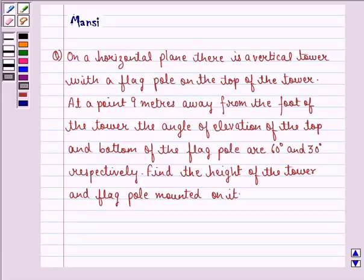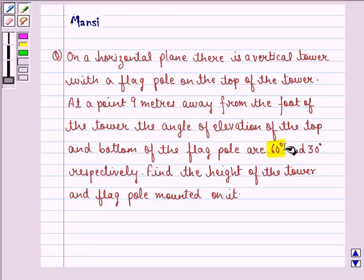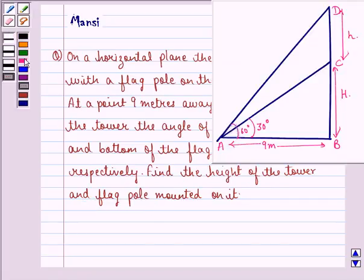Hi and welcome to the session. Let's work out the following question. On a horizontal plane there is a vertical tower with a flagpole on the top of the tower. At a point 9 meters away from the foot of the tower, the angle of elevation of the top and bottom of the flagpole are 60° and 30° respectively. Find the height of the tower and flagpole mounted on it.